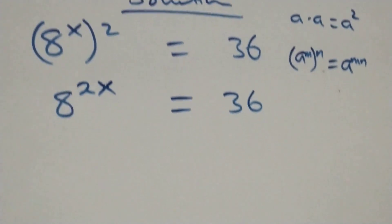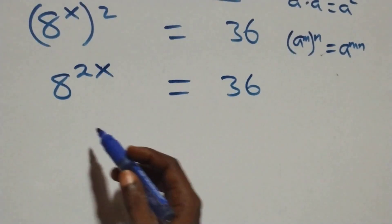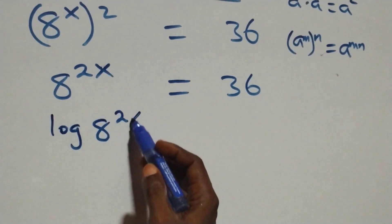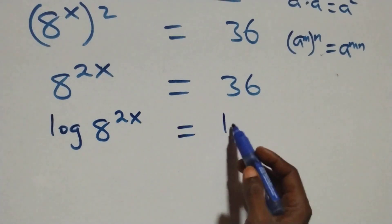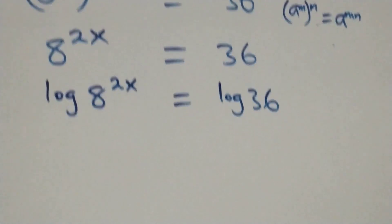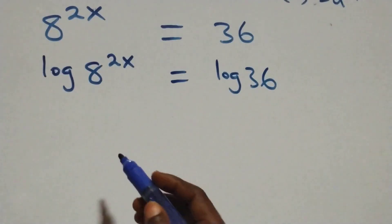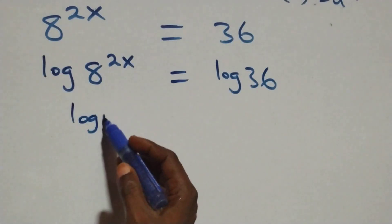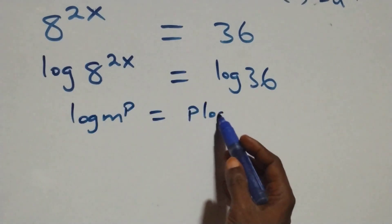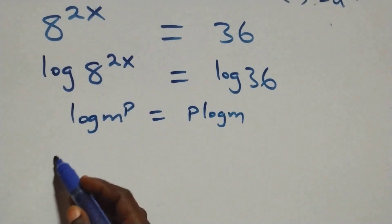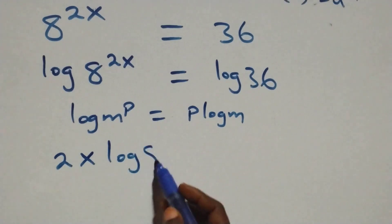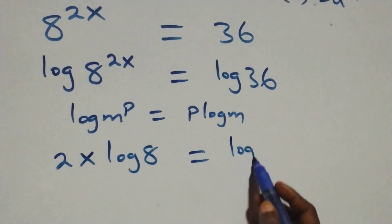The next step: we take the log on both sides, so we have log 8 raised to power 2x equals log 36. We apply the power log rule — when we have log m raised to power p, this is the same thing as p log m — and this becomes 2x log 8 equals log 36.